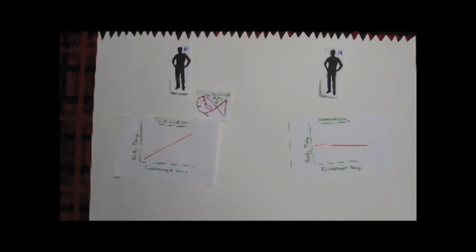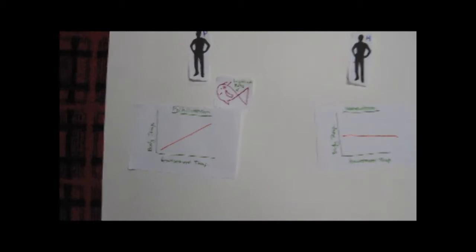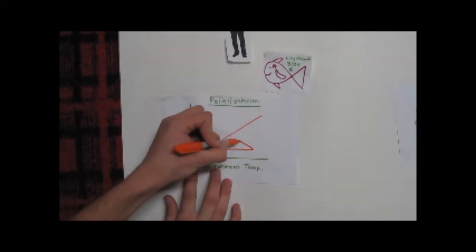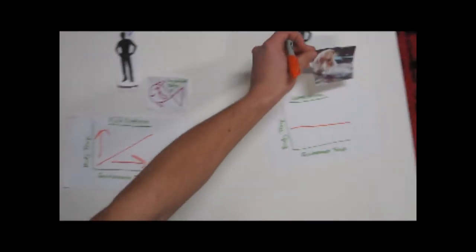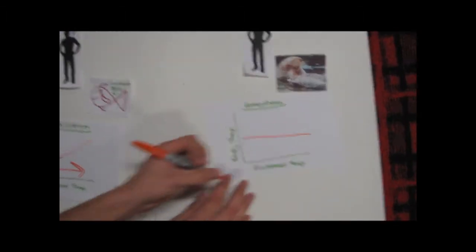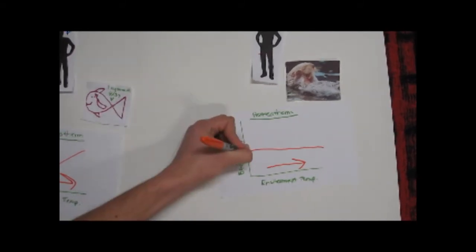Because it conforms to its environment's temperature. This means that as the temperature of the water changes, the largemouth bass's temperature changes. An example of a homeotherm is a river otter. Because even as the temperature of the river otter's environment changes, the body temperature of the river otter stays constant.